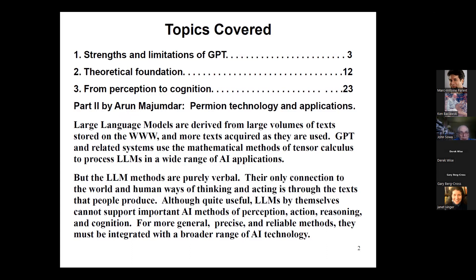I want to emphasize that emotions are extremely important because emotions are what controls what people do. Without emotions, intentionality, wisdom, and empathy, the computer will never be a true AI system. It may do interesting computation, but not true artificial intelligence. Part two will be by Arun Majumdar, who will talk about the Permian technology and its applications — a very important extension to the work we had been doing 10 to 20 years ago.